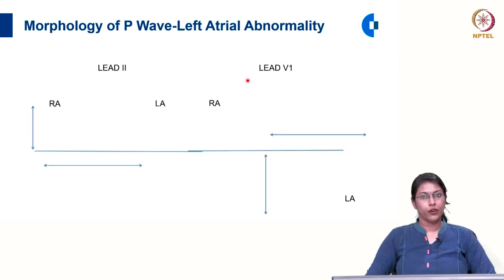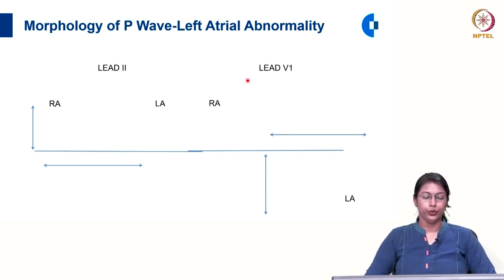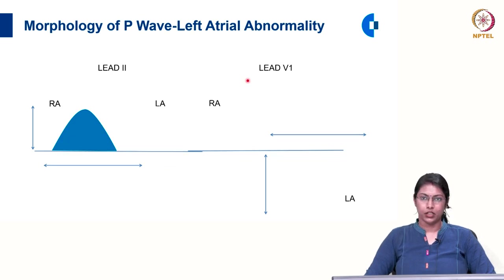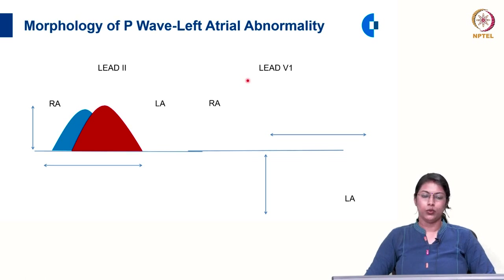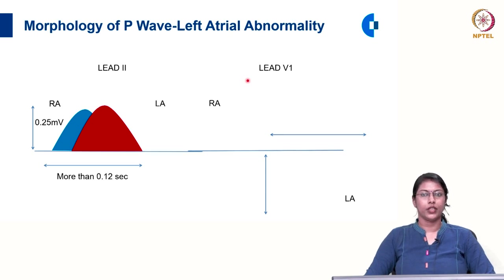In the morphology of the P wave in left atrial abnormality, the initial component in lead 2 contributed by the right atrium remains the same, whereas the component contributed by the left atrium is now prolonged. We see a notched P wave in lead 2 with amplitude remaining the same but duration more than 0.12 second, and between these two humps there should be at least one small square.